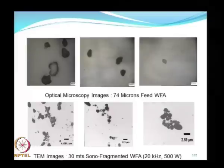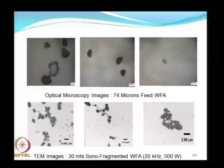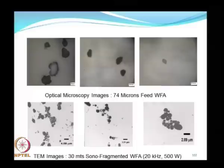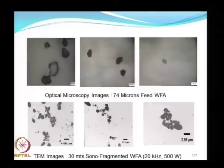In terms of characterizing particles produced by sonofragmentation, microscopy is obviously a very useful technique. To look at the feed alumina particles, optical microscopy is sufficient since these are in the micron size range — the feed particle size here is in the 74 micron range. However, after sonofragmentation, you really cannot see the particles anymore using optical microscopy, which is limited by its magnification. Even the best optical microscopes available today can produce only about 1000x magnification, which is still not sufficient to see and resolve nano-dimensional particles. So, then you resort to techniques like SEM and TEM.